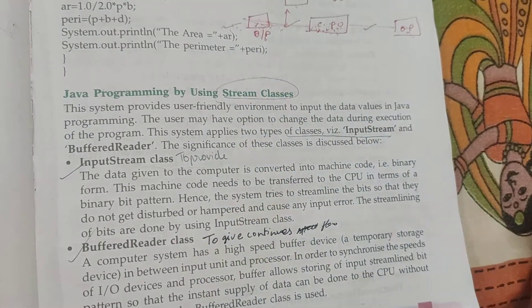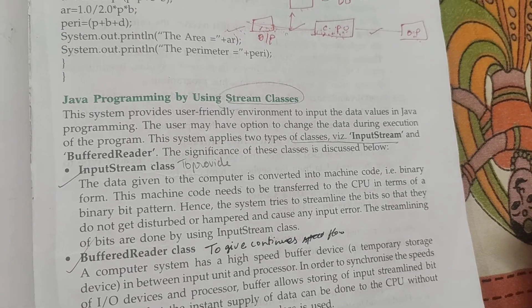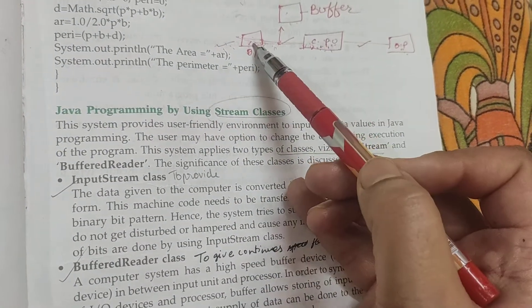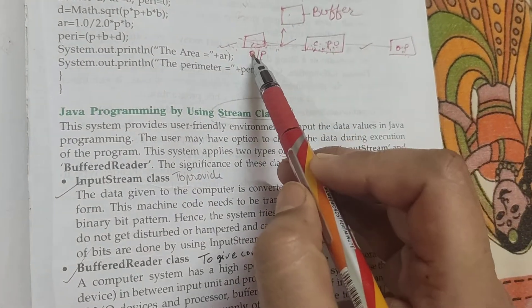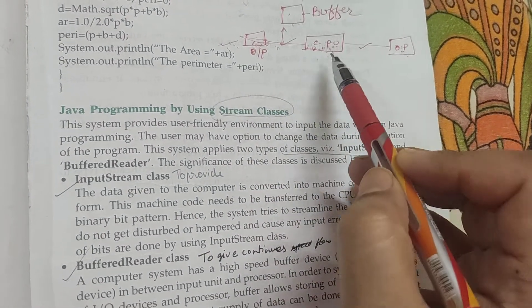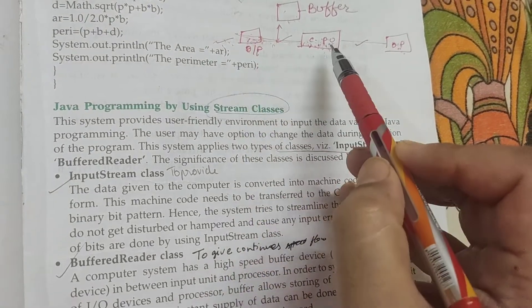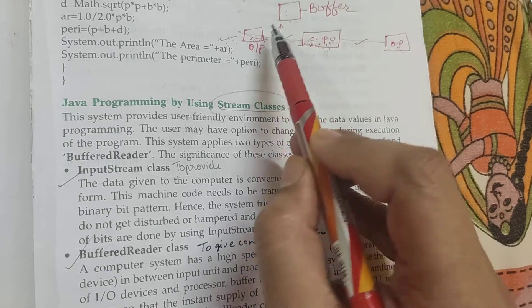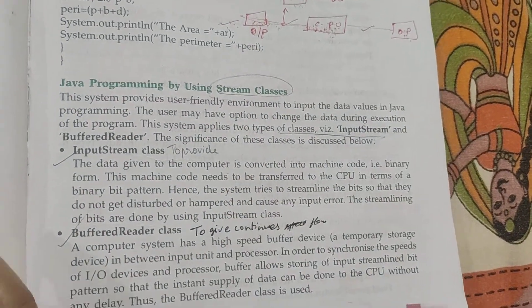What is the need of buffer? The question is what is the need? So to synchronize the speed between input and CPU, there is a temporary storage which is known as buffer. Here temporary data is stored and continuously passed to the CPU for processing.